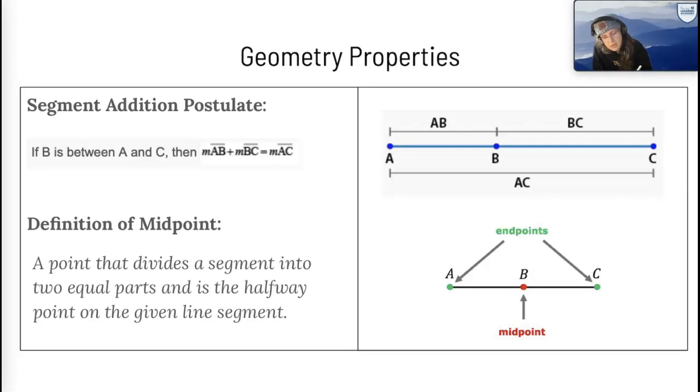Segment addition postulate. What the segment addition postulate is telling us is if the measure of angle AB is added to the measure of angle BC, because they are segments on a larger line segment, then when you add them together, they equal segment AC. AB plus BC equals AC. Crazy. I know.